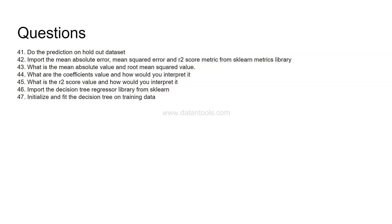Initialize and fit the decision tree on the training data with no custom parameters — just use the default parameters. If you want to see the defaults, just print the initialized model object and it will show all default parameters. Then fit the model straightforwardly, and predict the values on the test data.